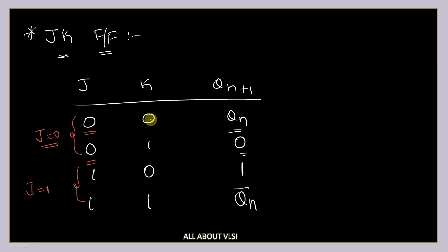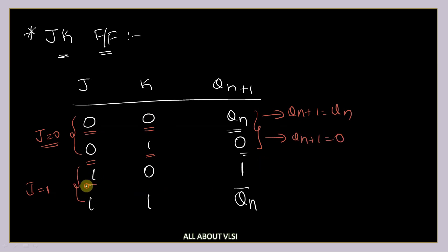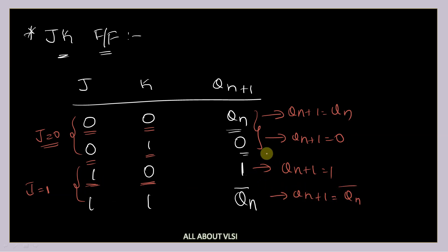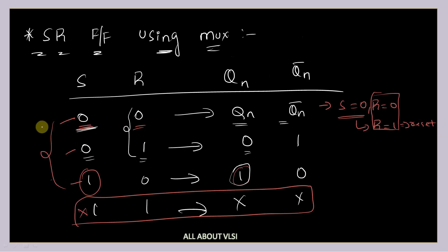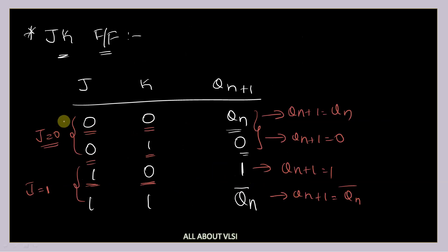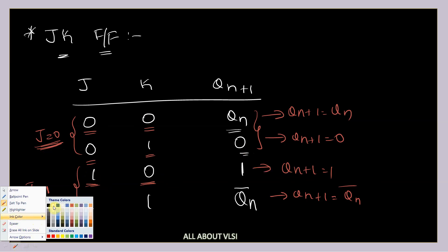When J is equal to 0, depending on the value of K, QN+1 is equal to QN for K=0, and QN+1 is equal to 0 for K=1. When J is equal to 1, QN+1 is equal to 1 for K=0, and QN+1 is equal to QN bar for K=1 — the toggle condition. In the SR case, when S was 0 we depended on R, and when S was 1 the output was always 1. But in the JK case, in both scenarios — J equal to 0 and J equal to 1 — we depend on K for the output. So we need to decide how many multiplexers to use.